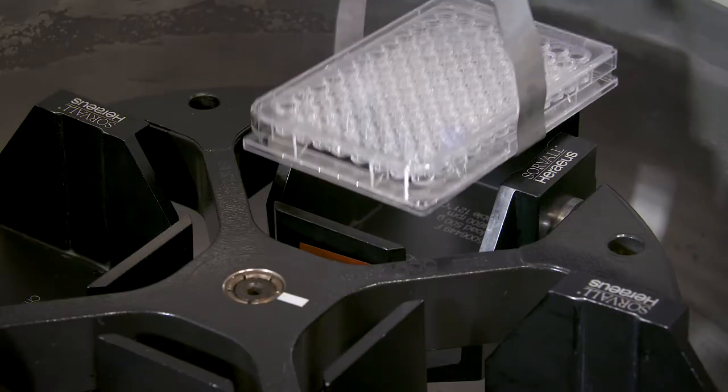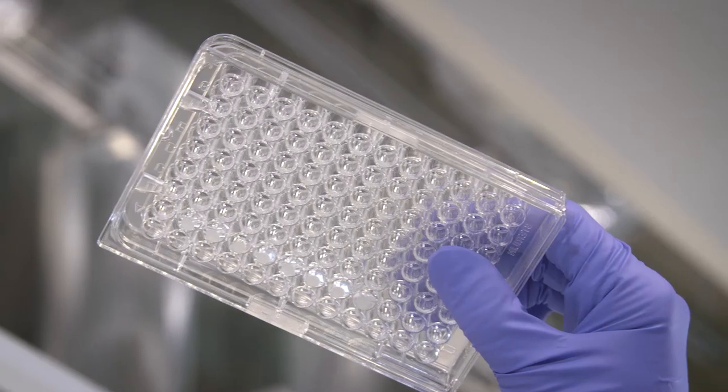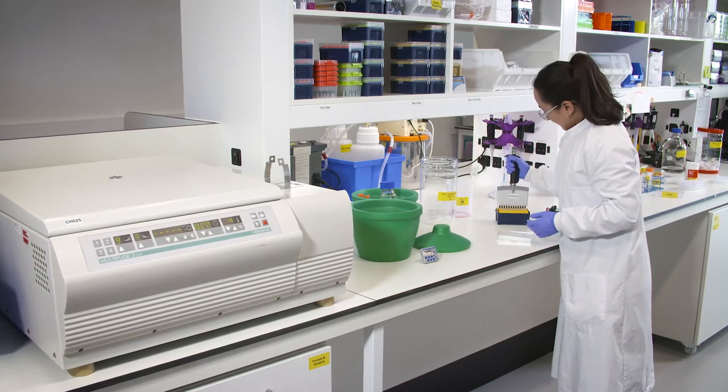Centrifuge your cells at 200 g's for 5 minutes. Make sure the pellet is visible in the plate, then discard the supernatant.